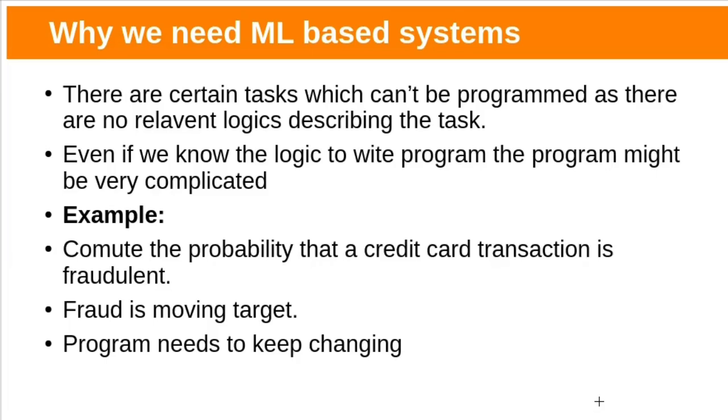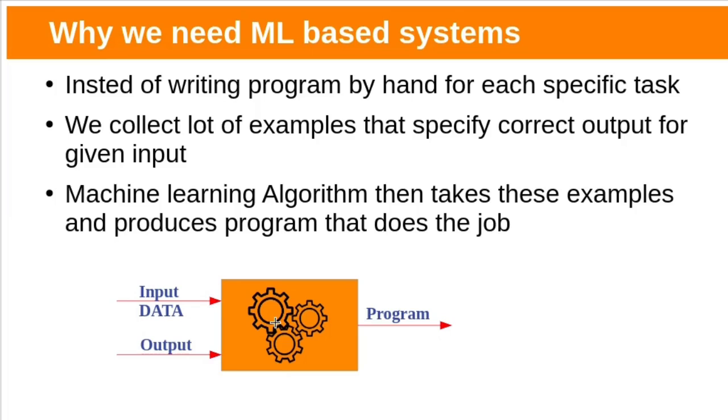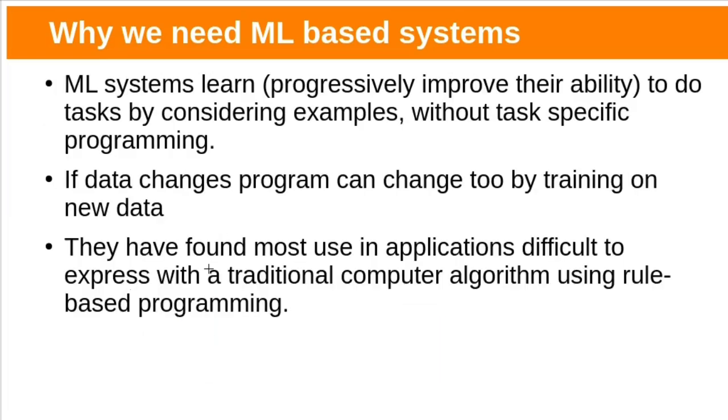Actually why do we need these ML based systems? There might be certain tasks which cannot be programmed as there are no relevant logics describing the task. Even if we know the logic to write the program, the program might be very complicated. For example, if we take the problem of computing the probability of a credit card transaction being fraudulent, it will be very complex and fraud is a moving target, so our program needs to keep changing. Instead of writing programs by hand for each specific task, we collect lots of examples with input and corresponding outputs. The machine learning algorithm will take the input and output data and build the model for us. It will write the program based on given input data. Machine learning systems without task specific programming improve the learning ability. If data changes, the program can change too by training on new data.